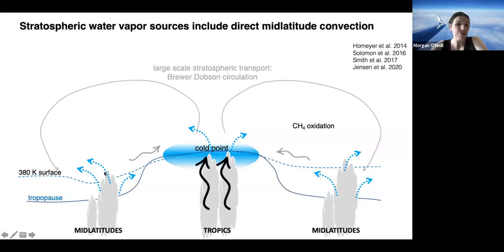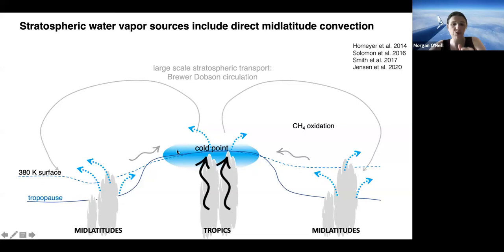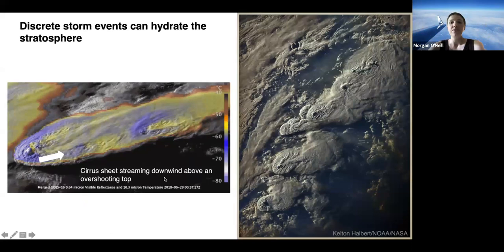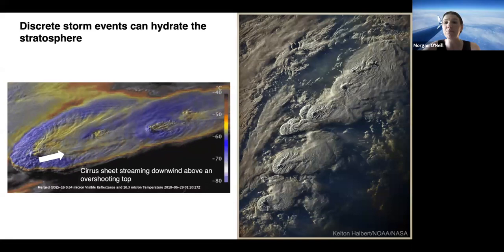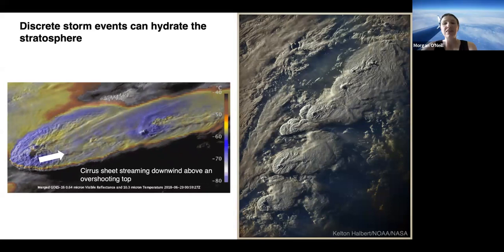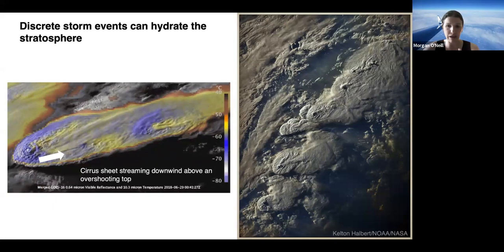If you have an energetic enough, tall enough storm, it can bypass this cold point, which restricts stratospheric humidity, and dump water vapor — actually ice — directly into the warmer mid-latitude stratosphere. That ice sublimates, creating a substantial water vapor source. This is still an important secondary source, not a primary one. I've been studying discrete mid-latitude events capable of this type of stratospheric hydration, because it's a clean link illustrating how storms can impact climate — something we're actively working on, with exciting physics at the small scale.